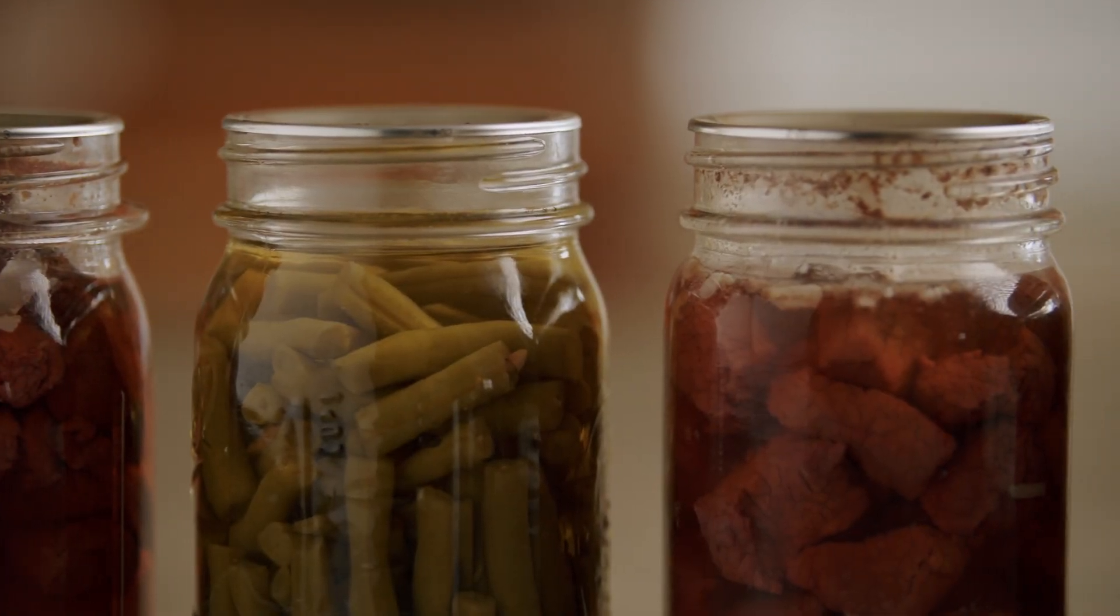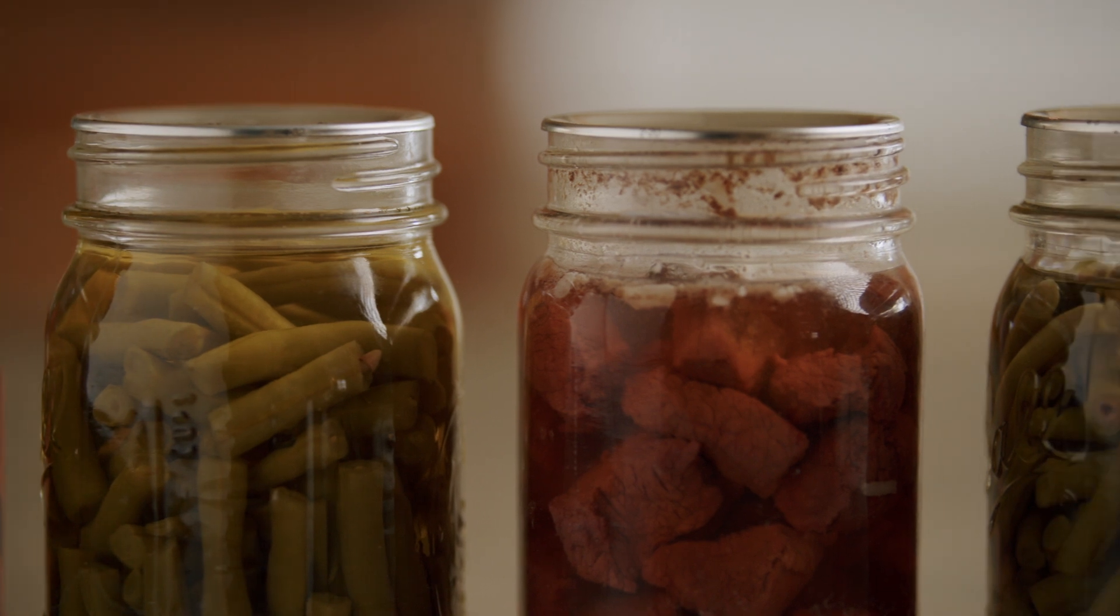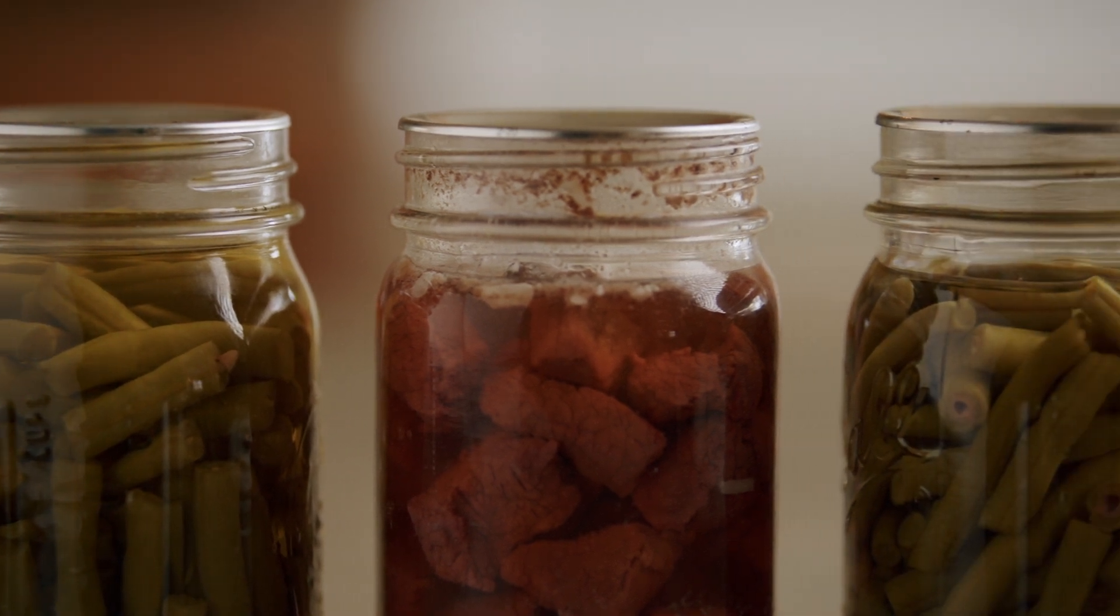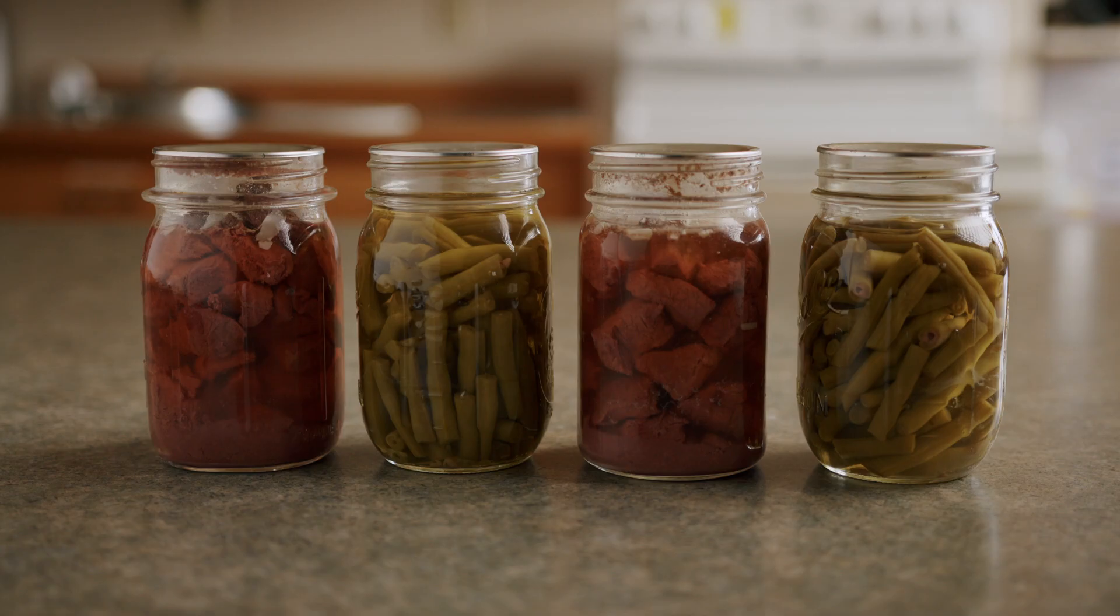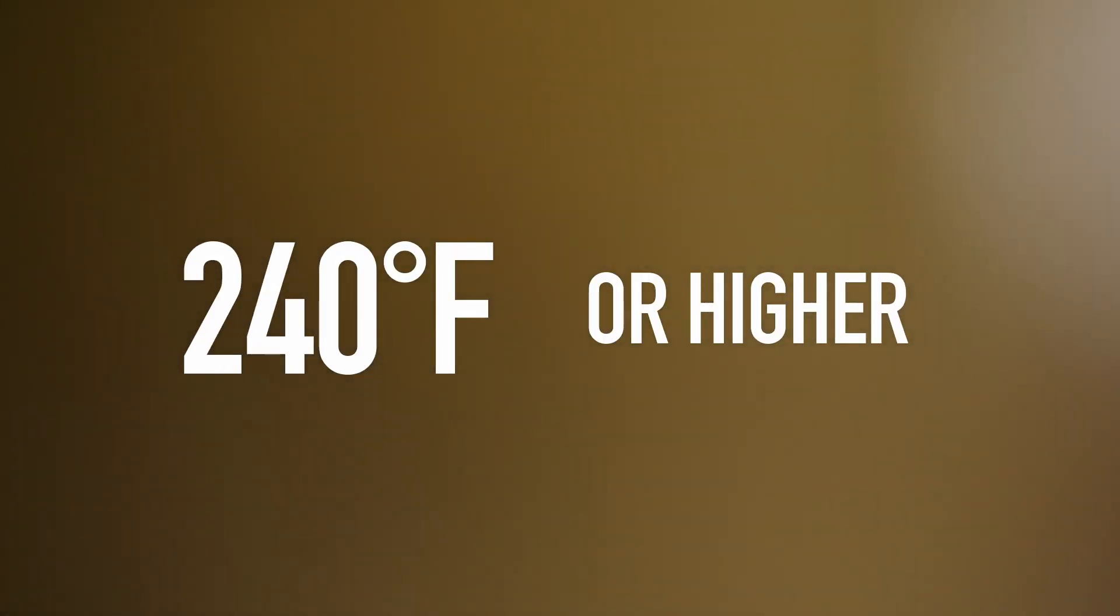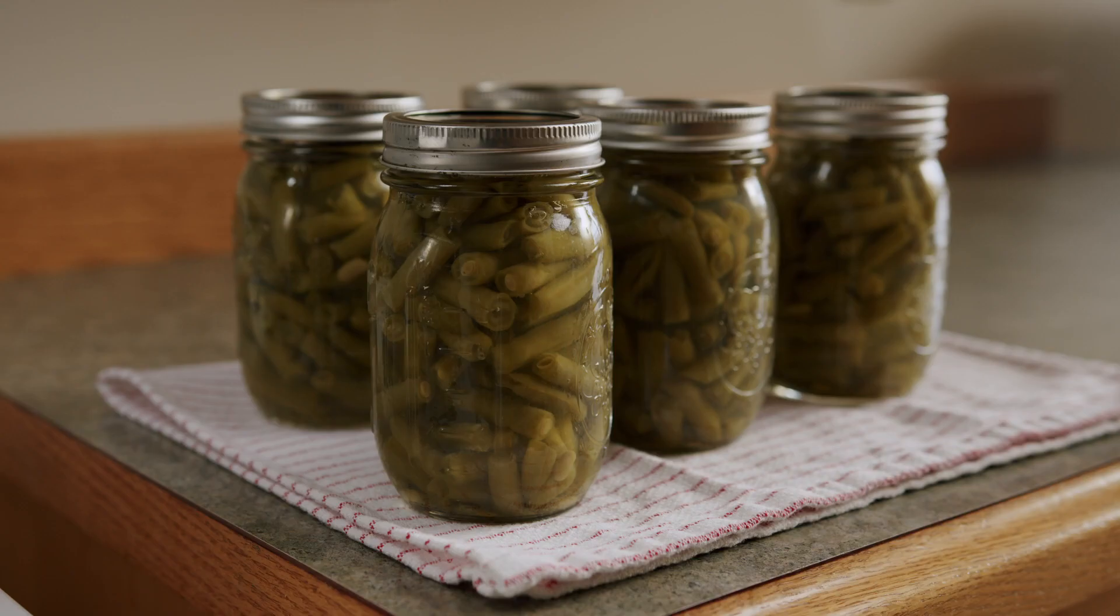Pressure canning is the only method recommended by the U.S. Department of Agriculture for safely canning low-acid foods such as vegetables, meats, and fish. Low-acid foods must be canned at a temperature of 240 degrees Fahrenheit or higher and held there for the time specified in the recipe to destroy the bacterial spores naturally present in these foods.